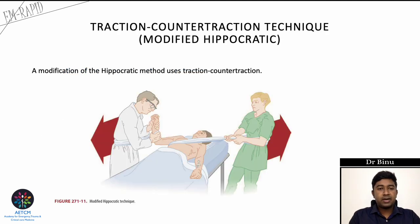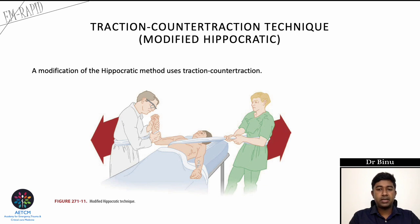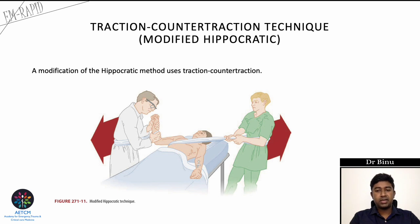The traction-countertraction technique (modified Hippocratic technique): the patient is supine with the arm abducted and elbow flexed at 90 degrees. A sheet is tied across the thorax and around the waist of an assistant for counter-traction, while another sheet around the patient's forearm allows the physician to apply gradual traction at the proximal forearm. Gentle internal and external rotation or outward pressure on the proximal humerus may aid reduction.